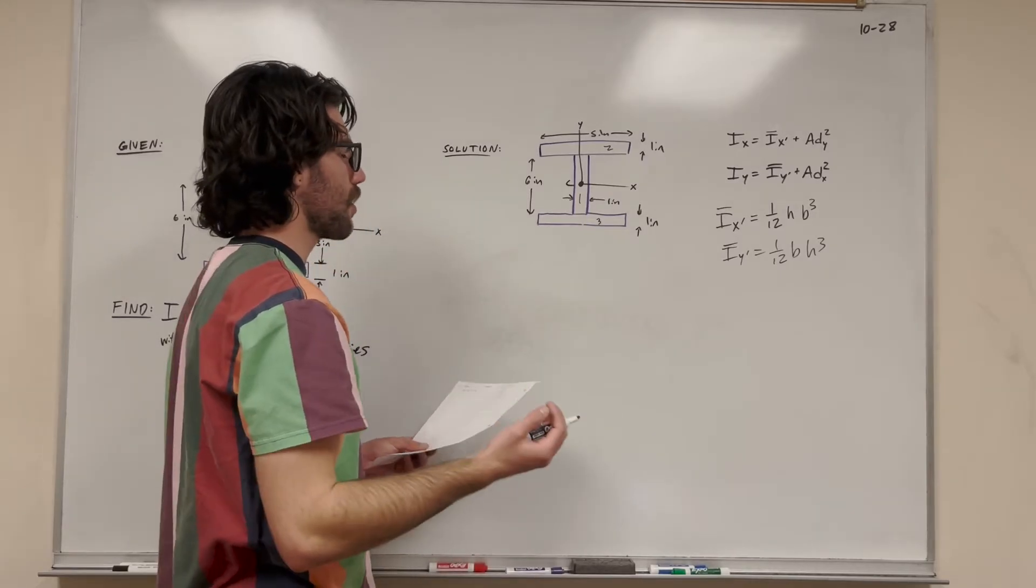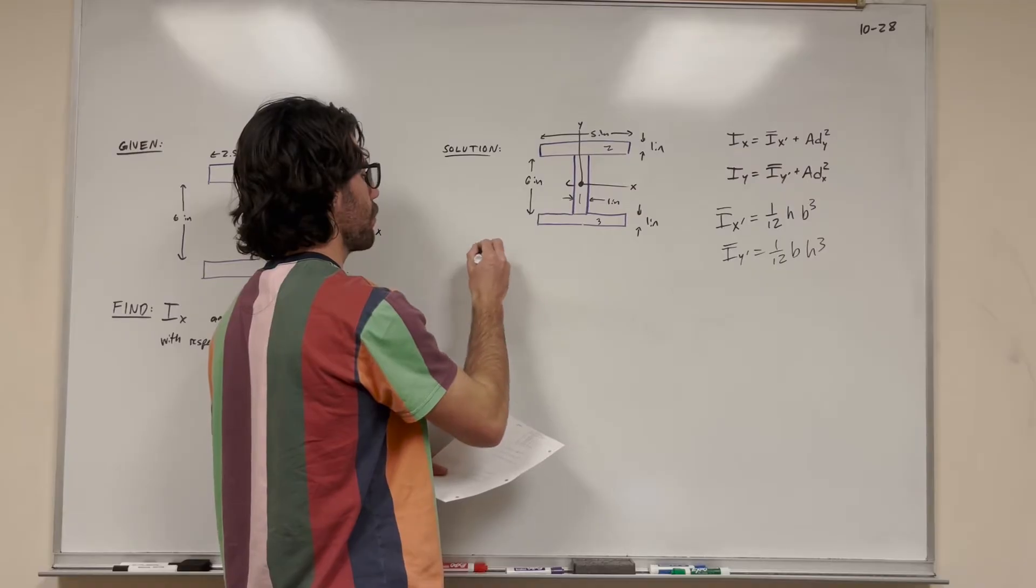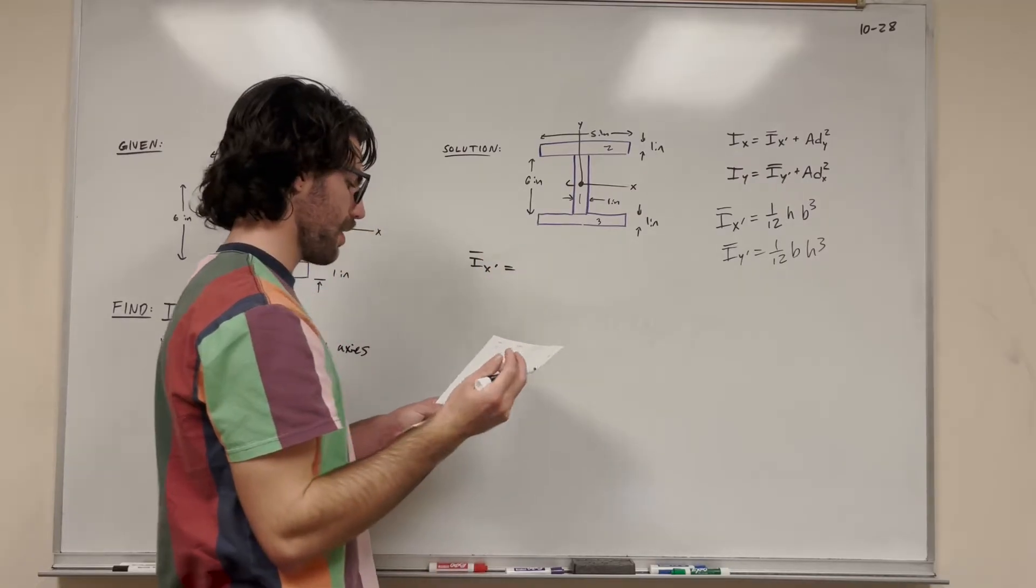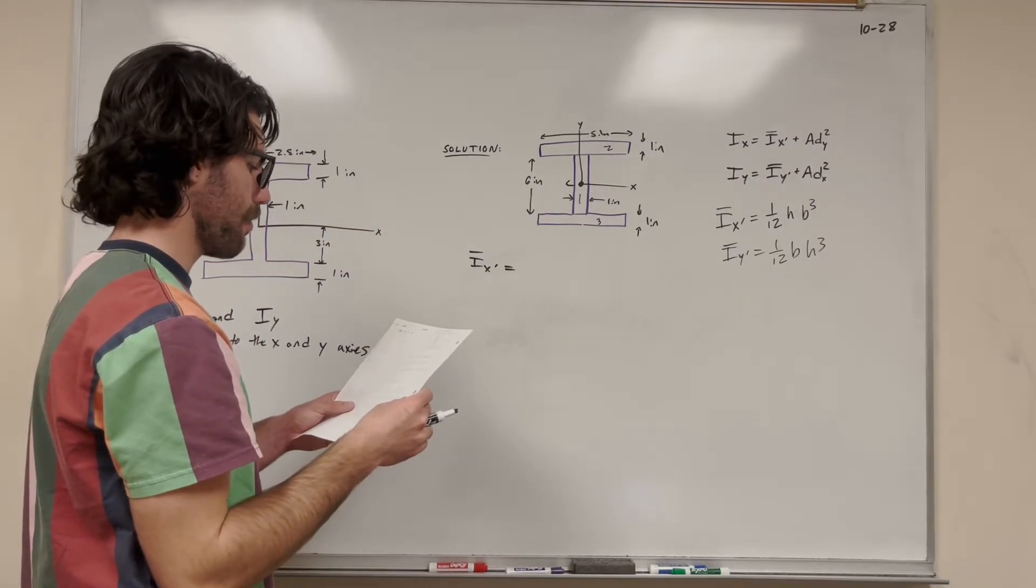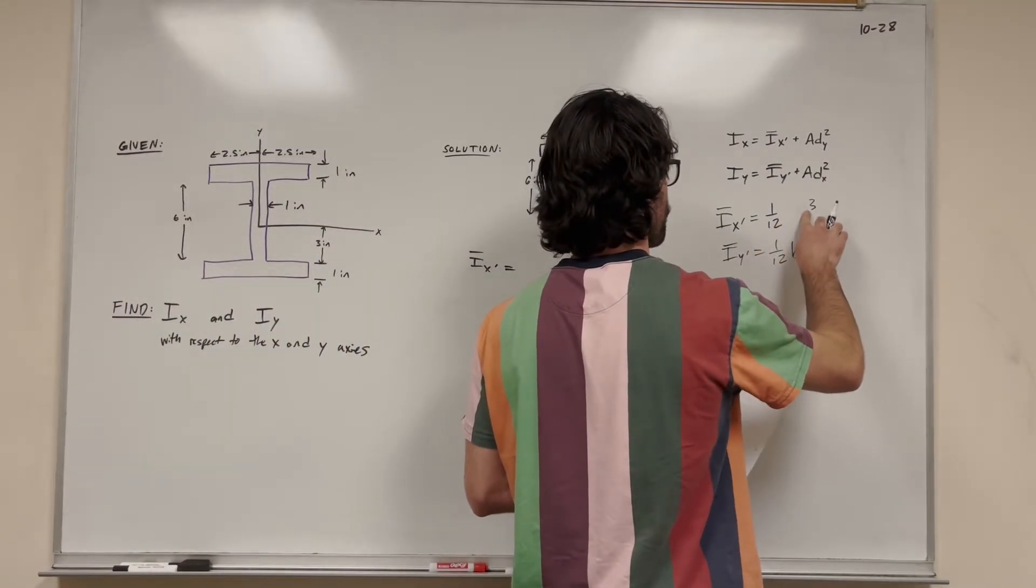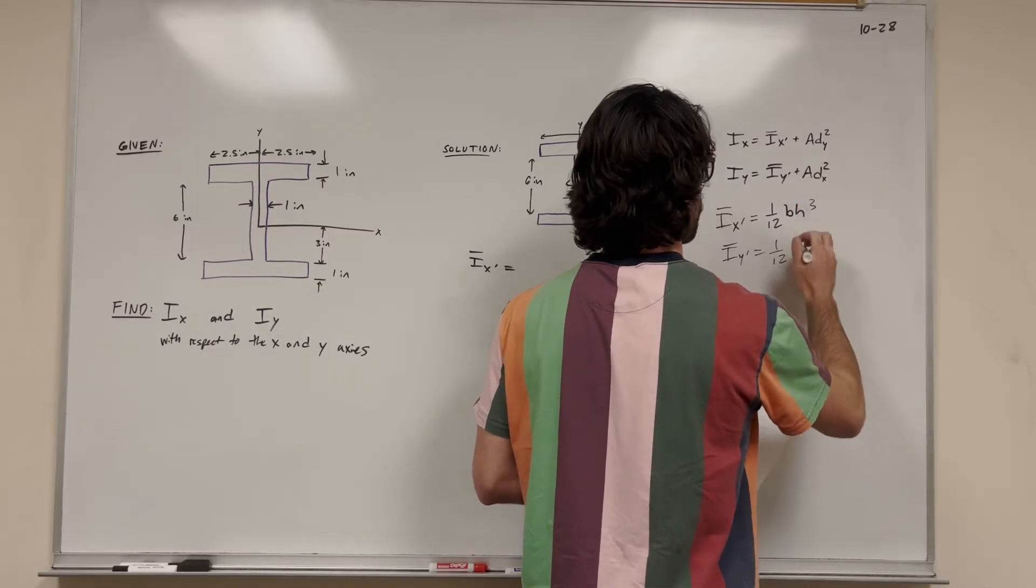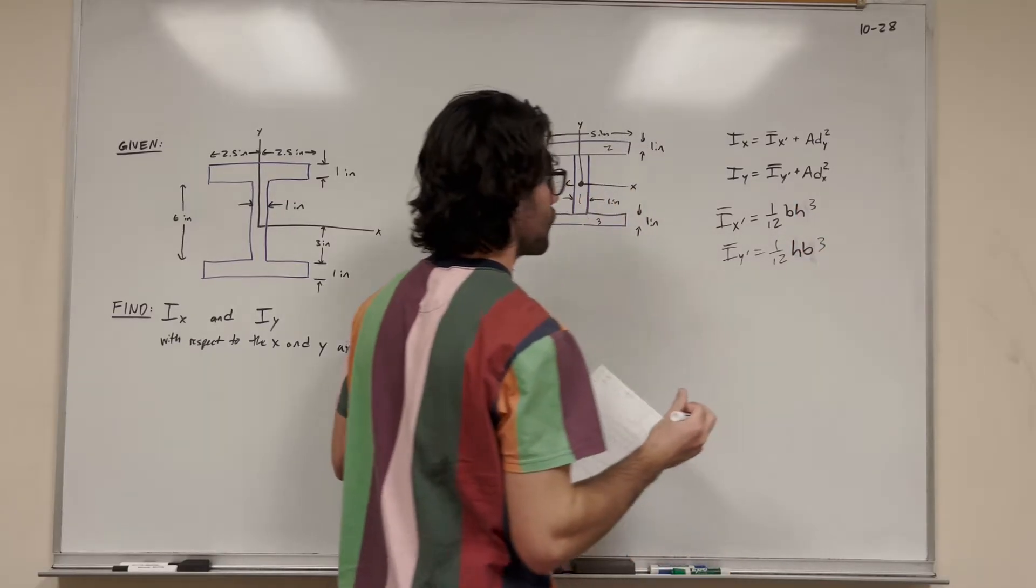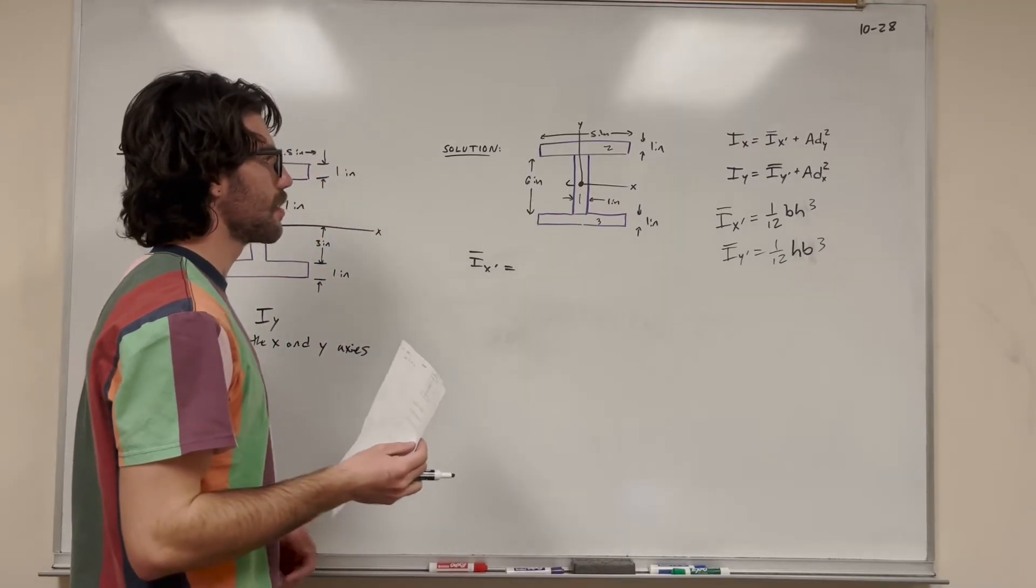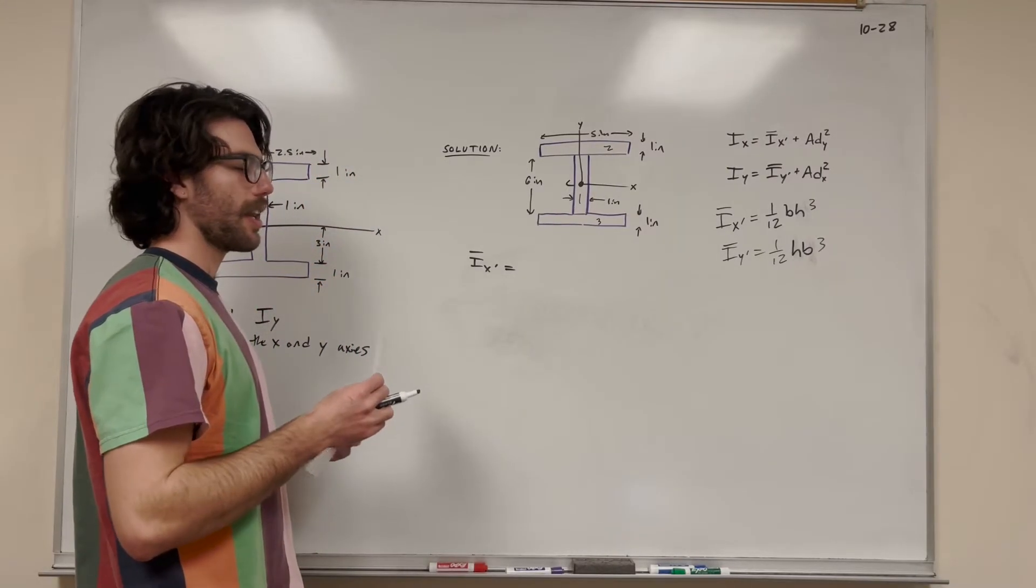So what are we going to start with? We're going to start with Ix prime. Let me make sure I'm doing this right - I think this should be backwards. It should be base height cubed, and this should be height base cubed. Alright, let's go ahead and solve for this.